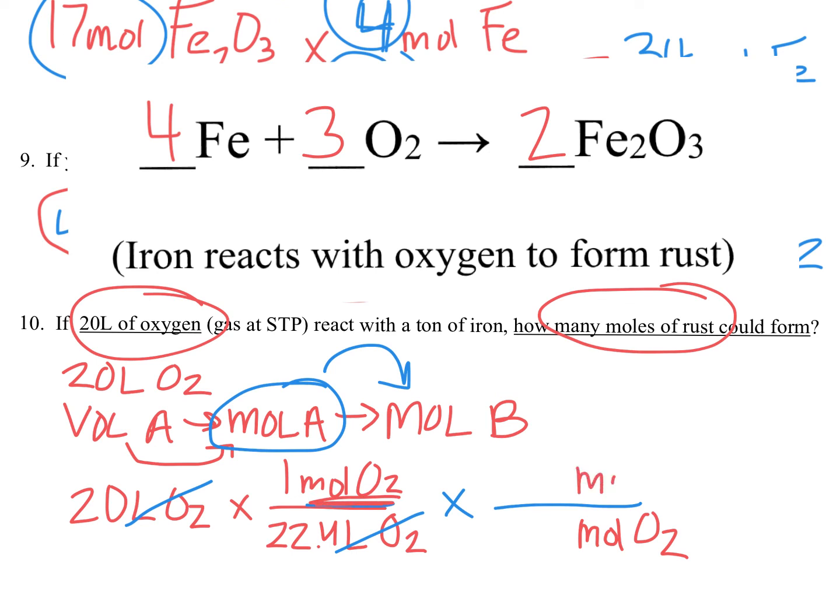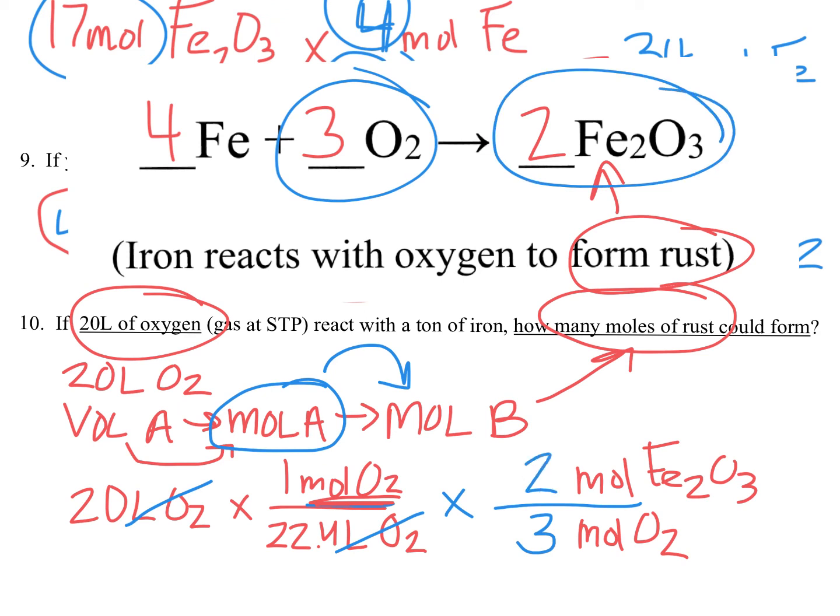And we're going to put moles of what we want. And moles of B is going to be rust. Rust is Fe2O3. And that says it right here. It forms rust. This is the only thing that forms. So that's how we know it's rust. Where do those numbers come from? Off the balanced equation. Oxygen is 3 moles for every 2 moles of rust.